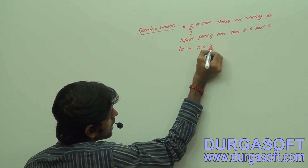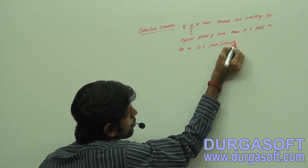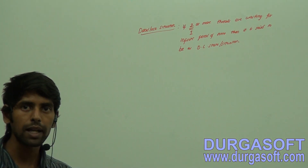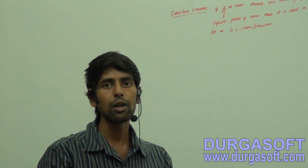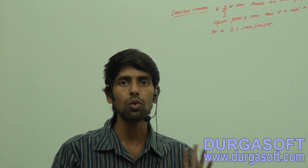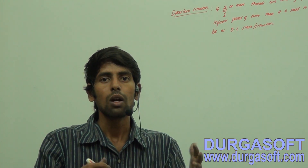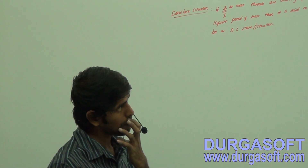Programmatically, how do we prove a deadlock? I am going to take two classes, each having synchronized instance methods. I will call one from a thread and the other from another thread. Let me show you the diagram for this.